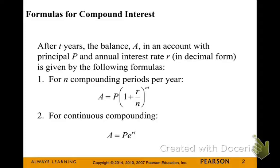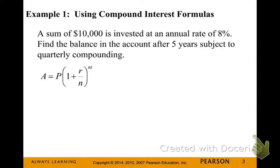These are formulas that are good to have memorized. Let's look at Example 1, using compound interest formulas. A sum of $10,000 is invested at a rate of 8%. Find the balance in the account after 5 years, subject to quarterly compounding.